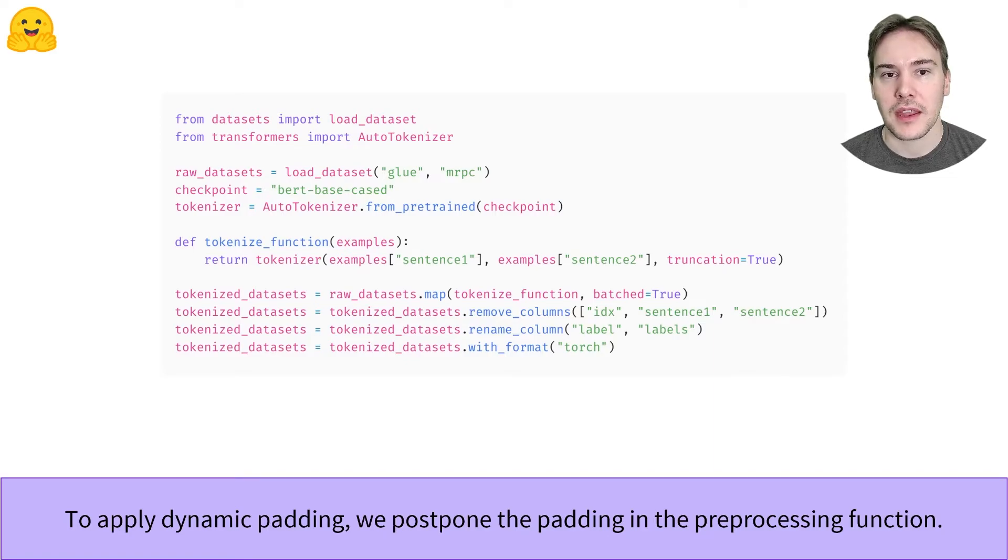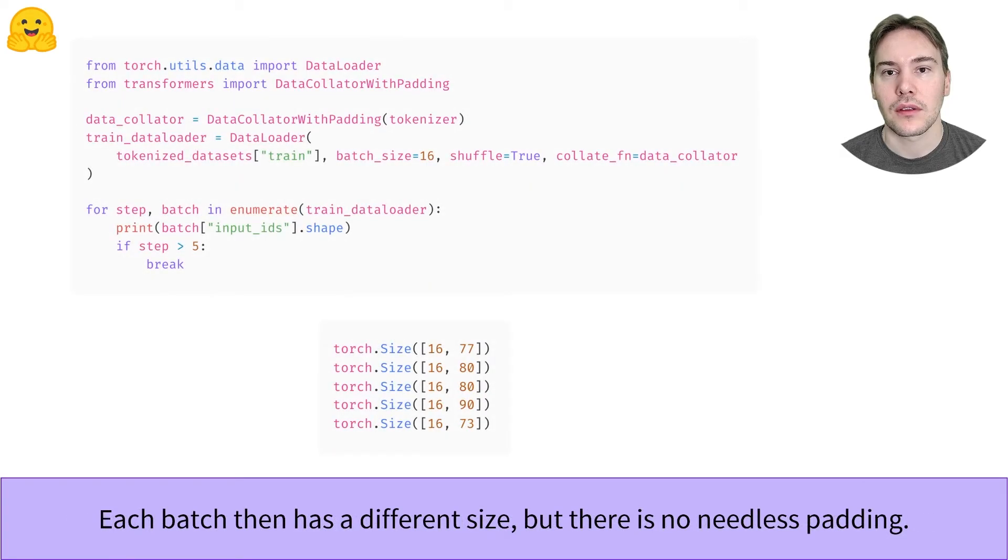Then we pad our samples dynamically by using a data collator. Data collator classes in the Transformers library are responsible for applying all the final preprocessing needed before forming a batch. Here, data collator with padding will pad the samples to the maximum length inside the batch of sentences.